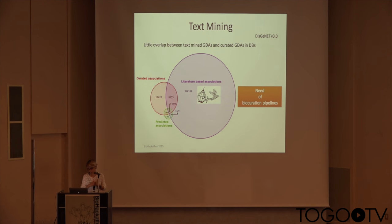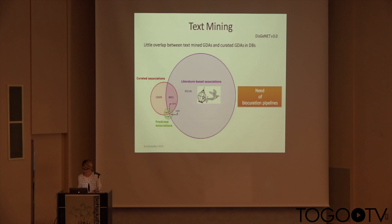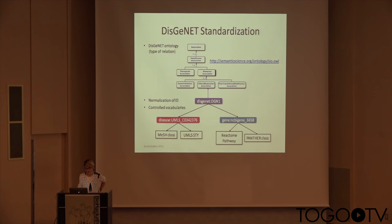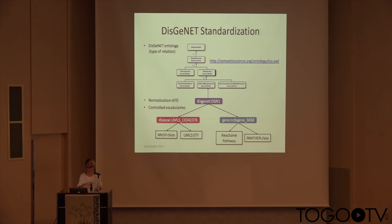Looking at the data, we see there is little overlap between the gene-disease associations extracted by text mining and the curated ones. So we definitely need bio-curation pipelines — I think it is an issue in the field. We also emphasize standardization of our data, and we developed an ontology to capture the knowledge in biomedical databases for the types of relationships between genes and diseases, in a novel language integrated inside.